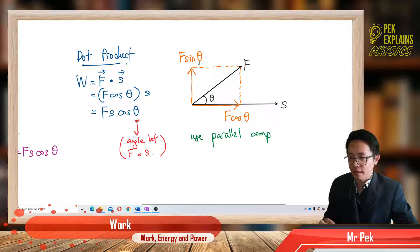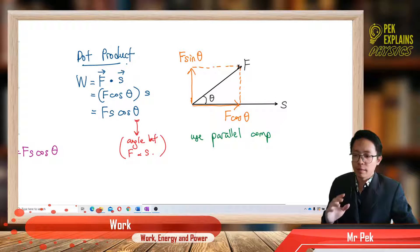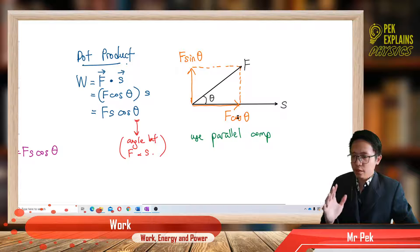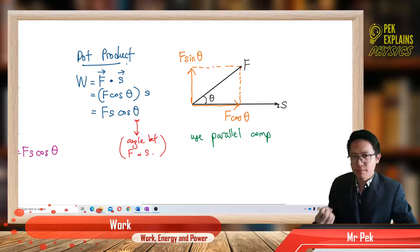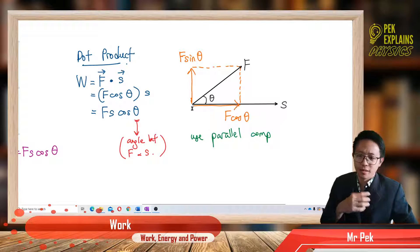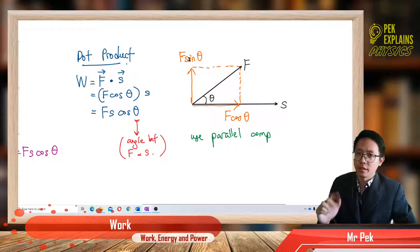Another component is the perpendicular component, F sin theta. This one sin theta because it is opposite to the angle. So force can be resolved into the parallel component and the perpendicular component. Which component contributes to the displacement? Which force will really move the object along the displacement? Of course, it's F cos theta.